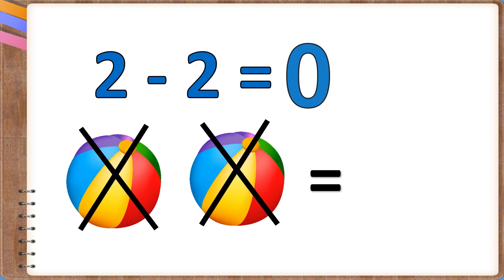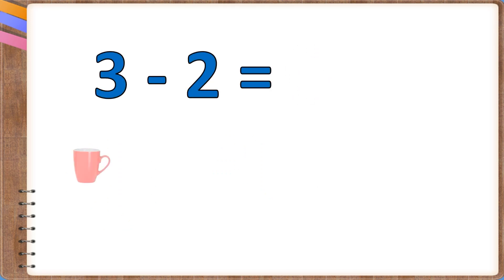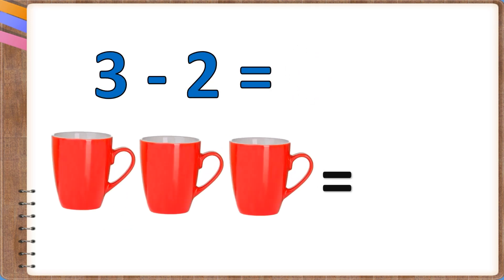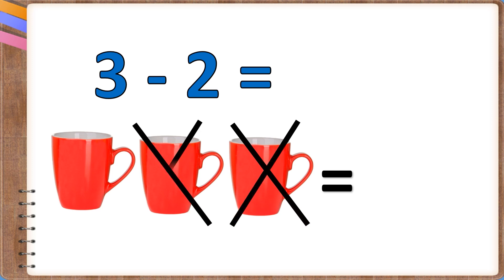You have zero balls. 3 minus 2. There were three cups on the table. You removed two of them. There is only one left.